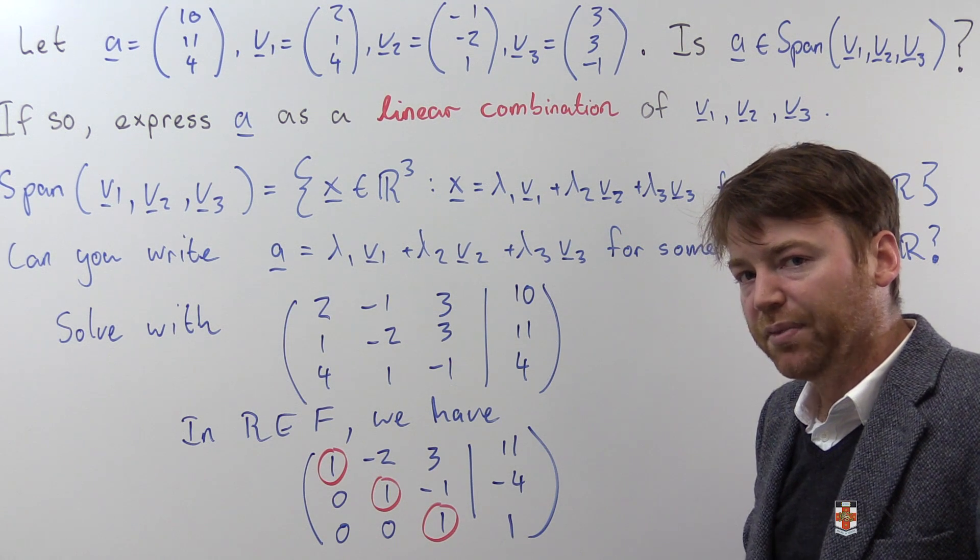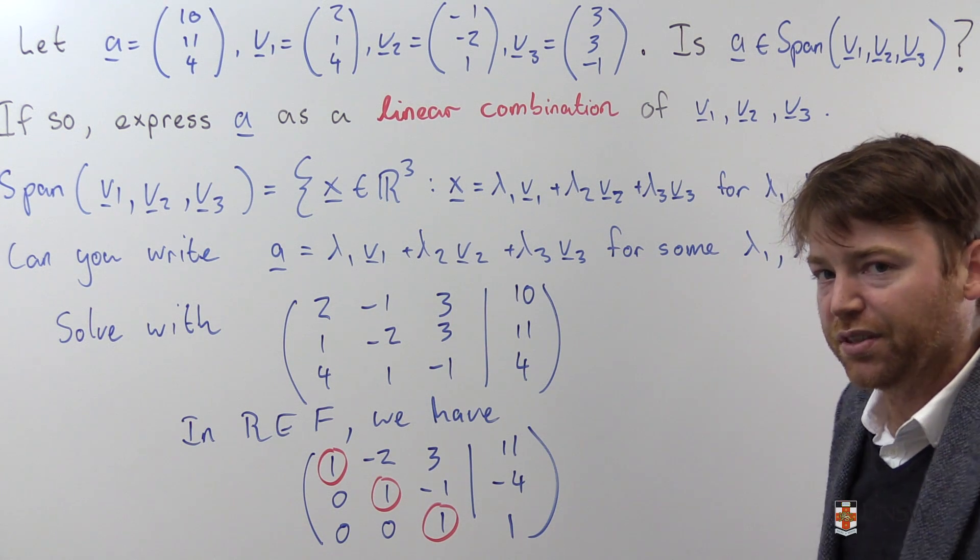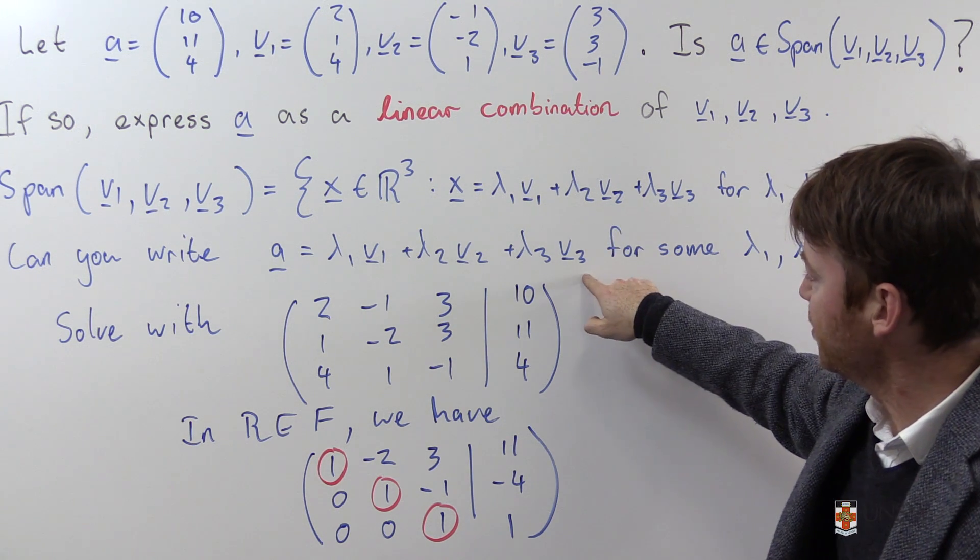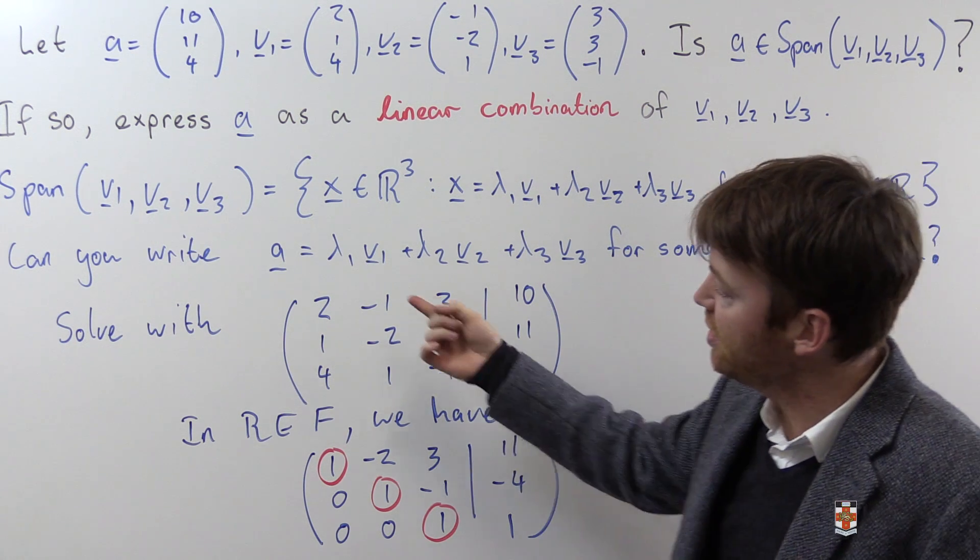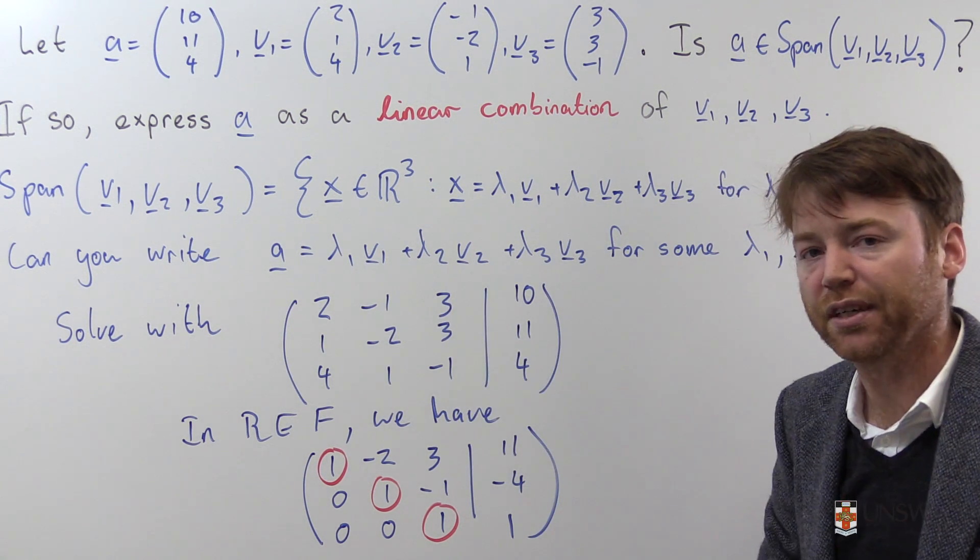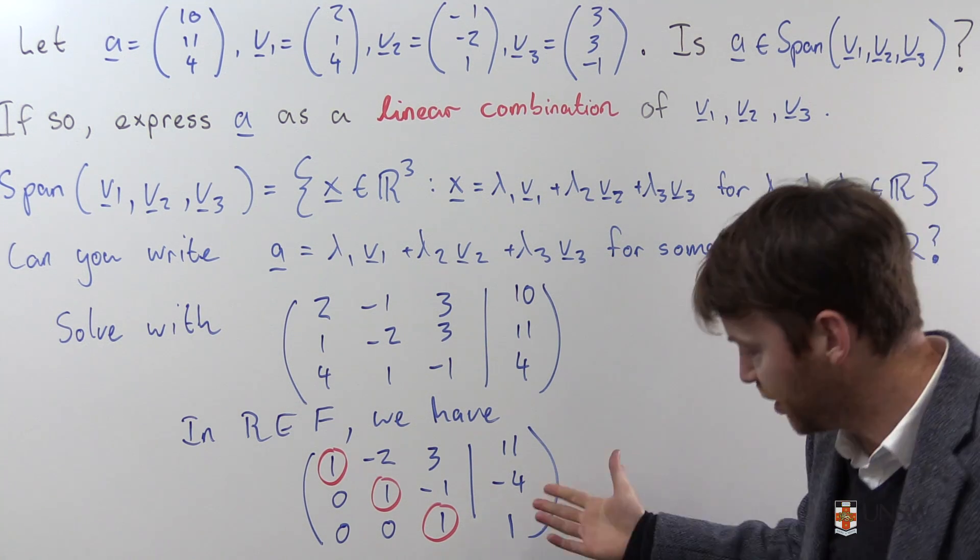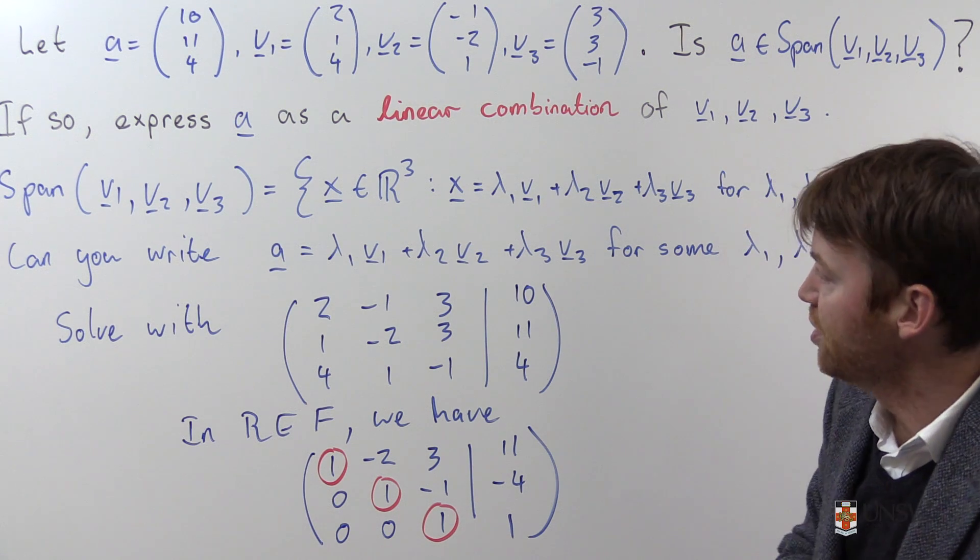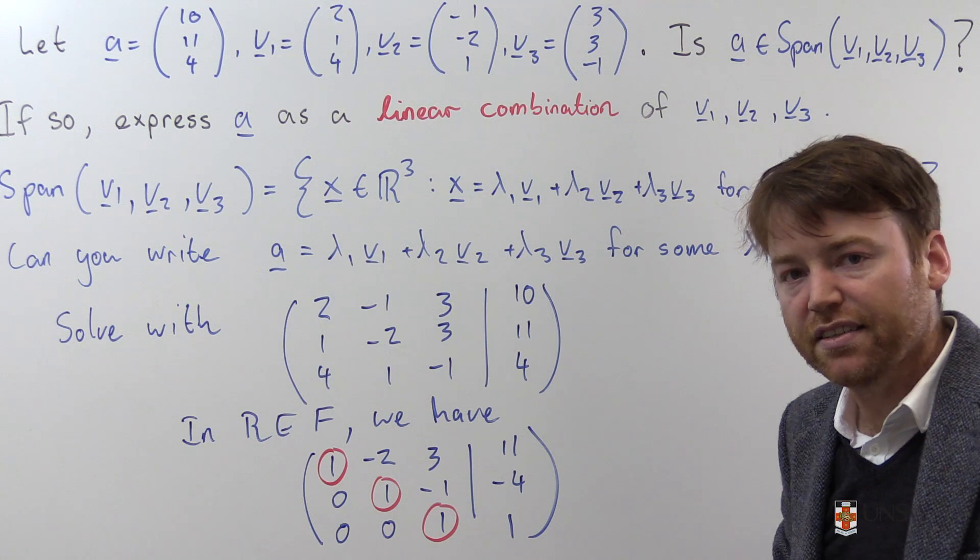This row echelon form tells me that there are solutions, unique solutions in fact, to this equation. So you can express a as a linear combination of v1, v2 and v3. We don't yet know what those lambdas are, but we know they exist. Thank you very much, row echelon form. So we can at this point say that, yes, A is in the span.